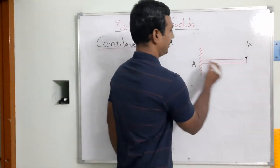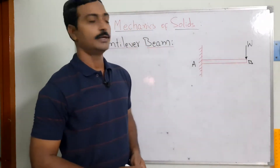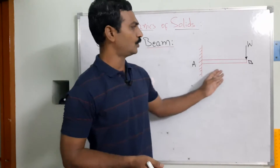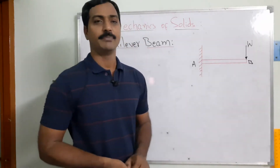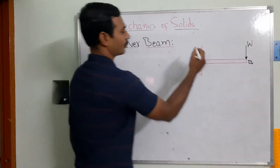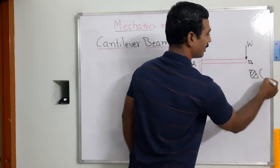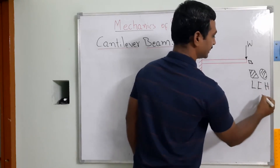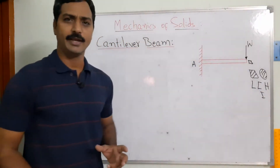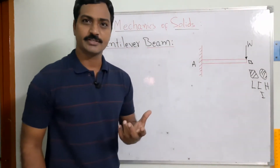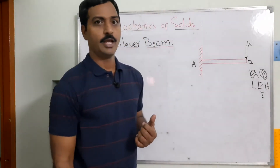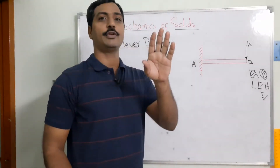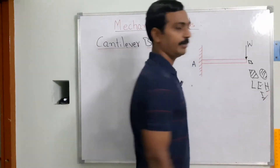Once we have the beam, we consider its cross section. The cross section may be square, circular, L, C, H, or I-shaped. In automobile applications, the C cross section is most commonly used. Railway tracks use the I-section. Beams made from steel typically use H-sections or I-sections.